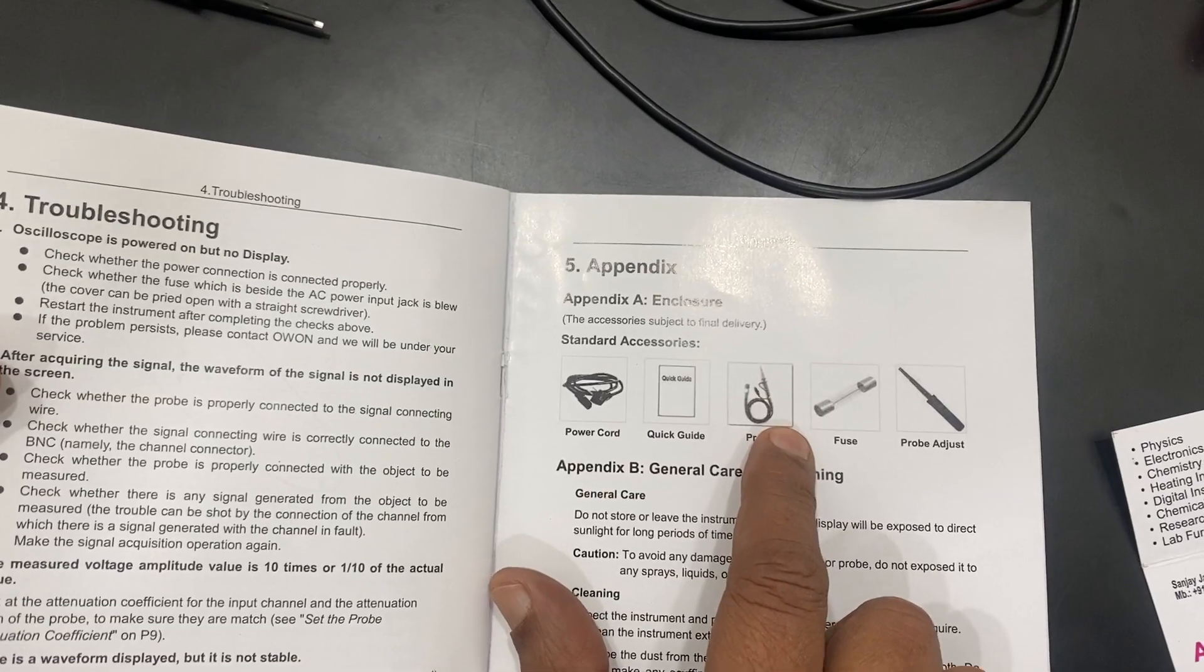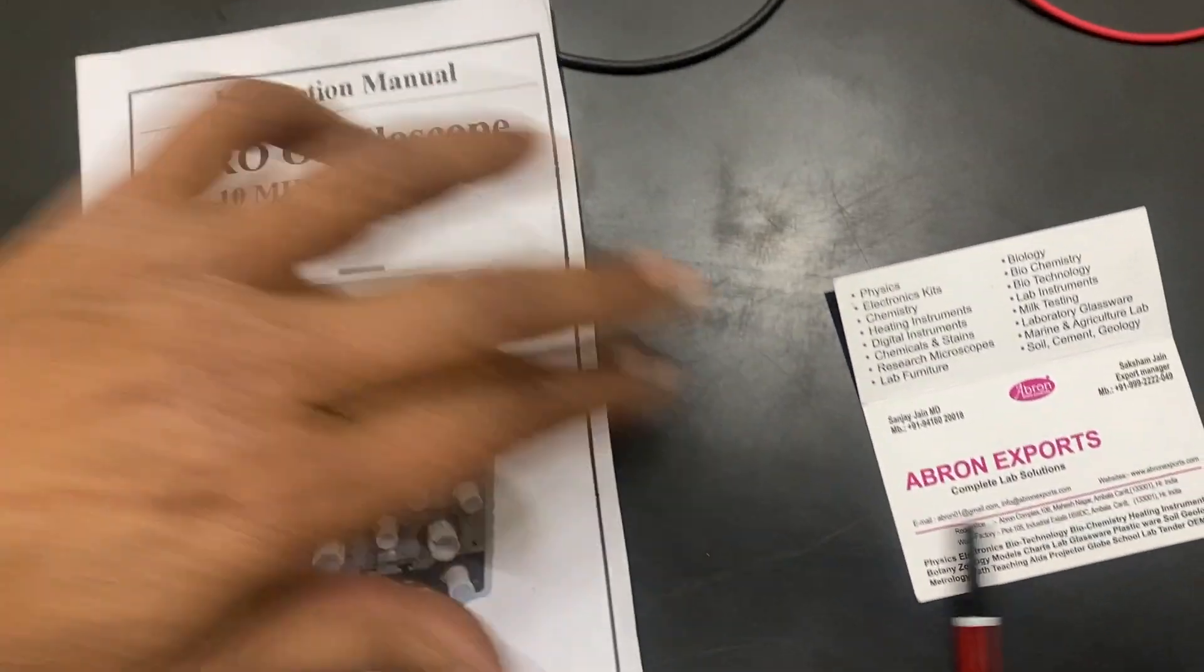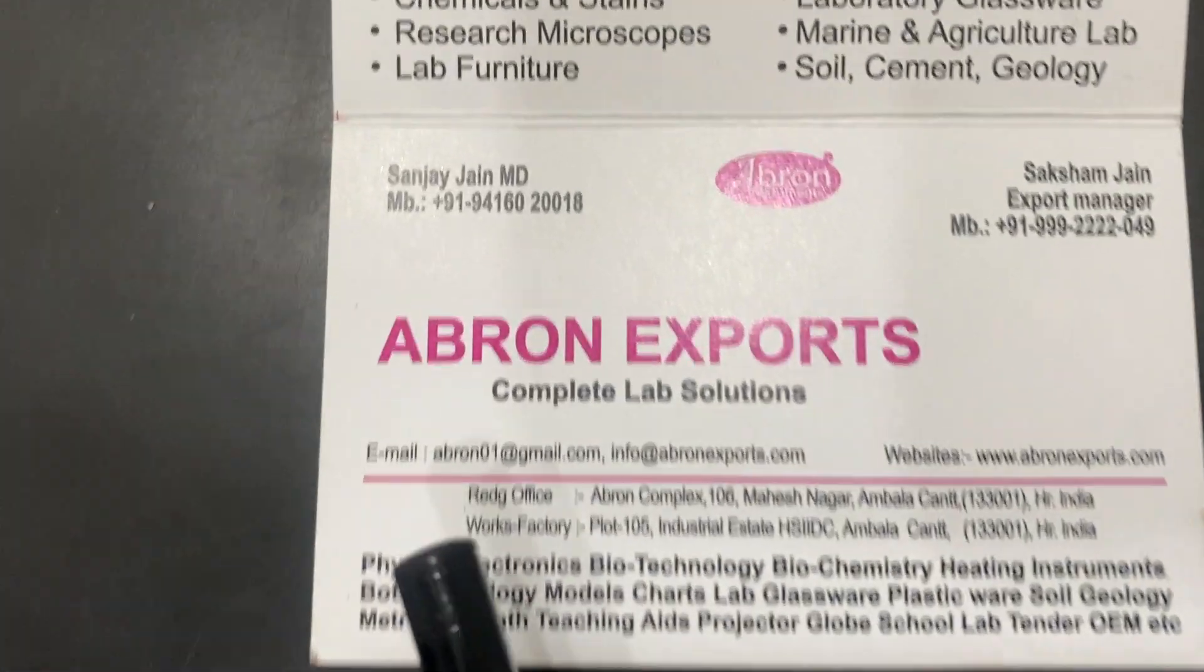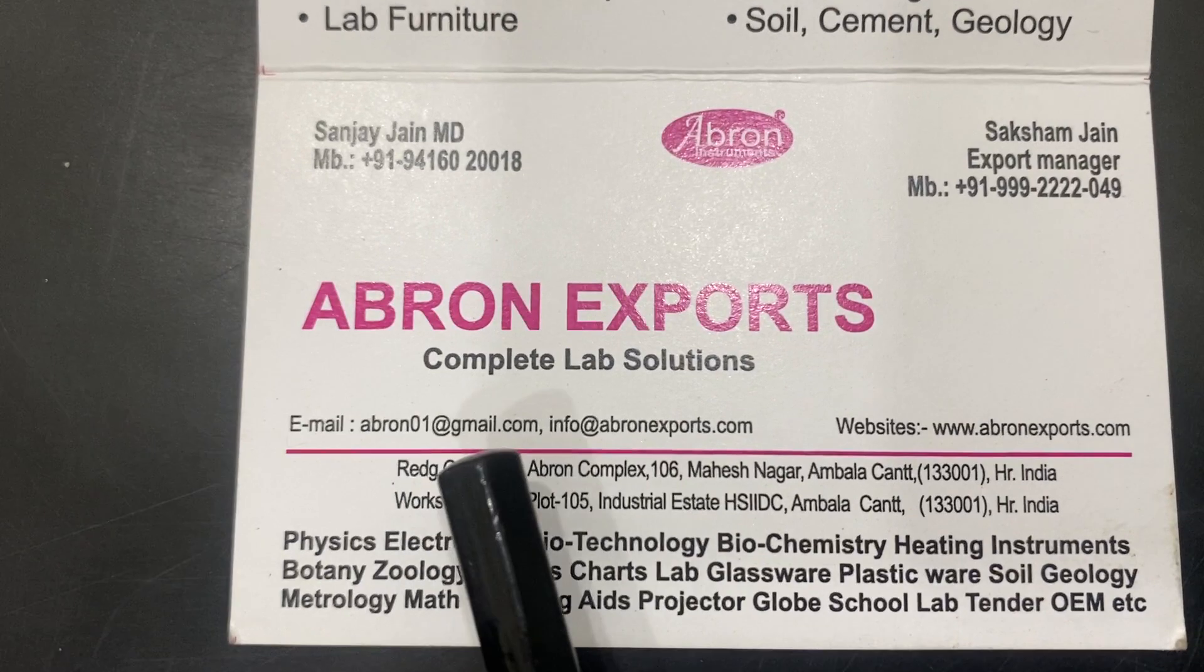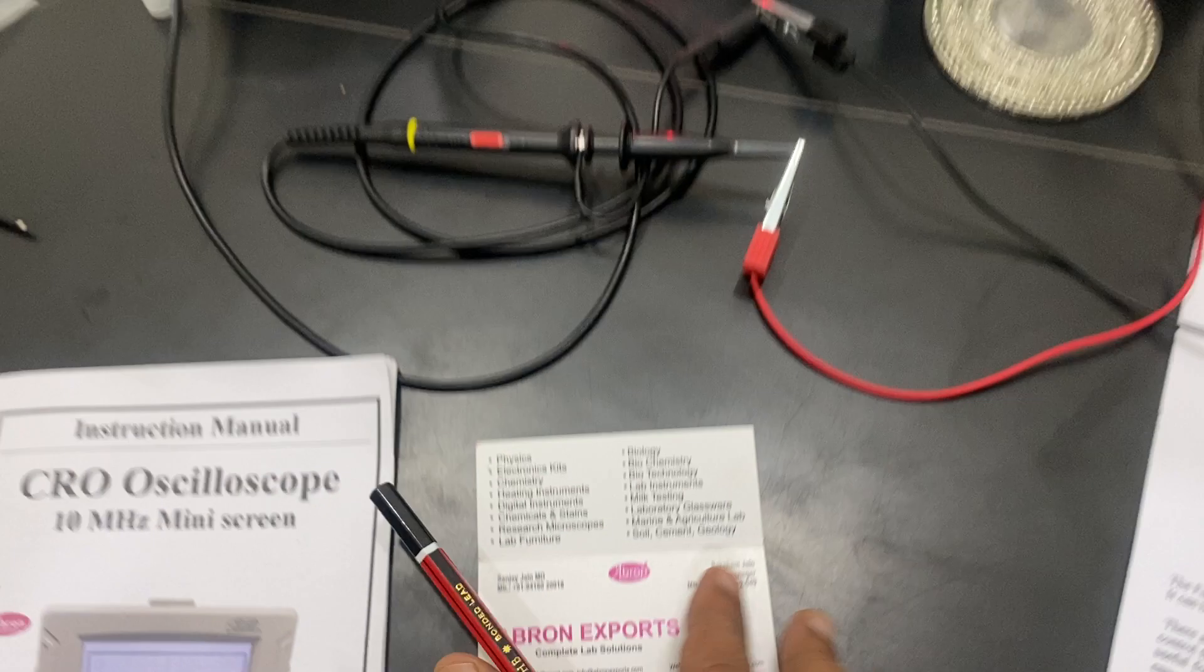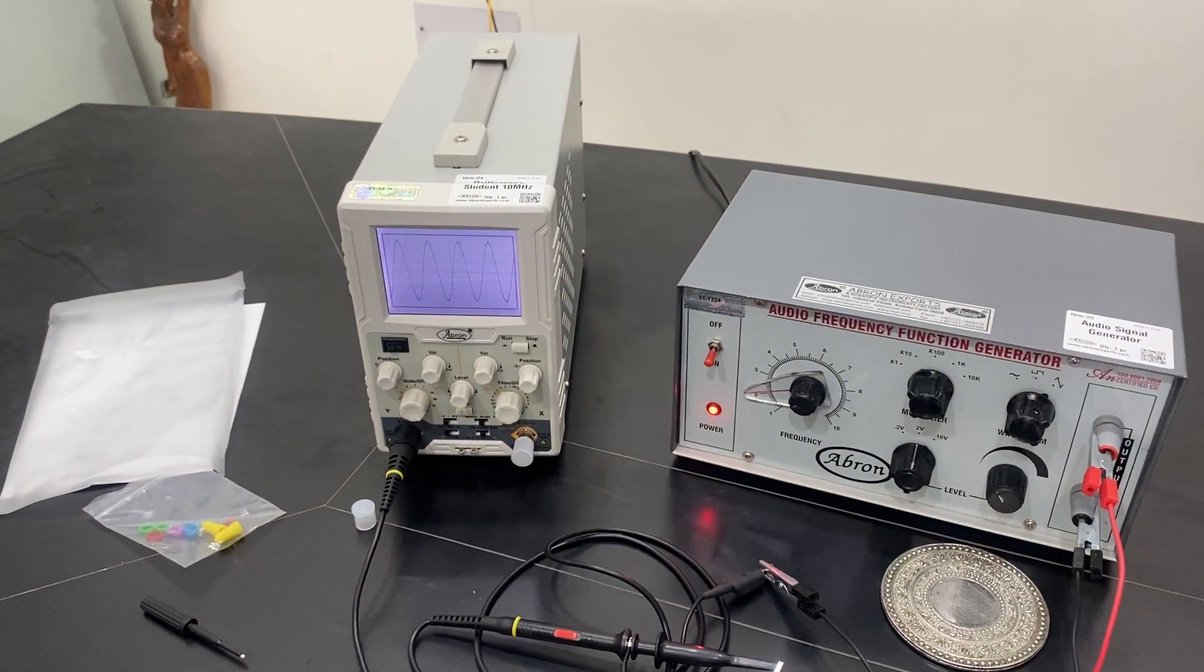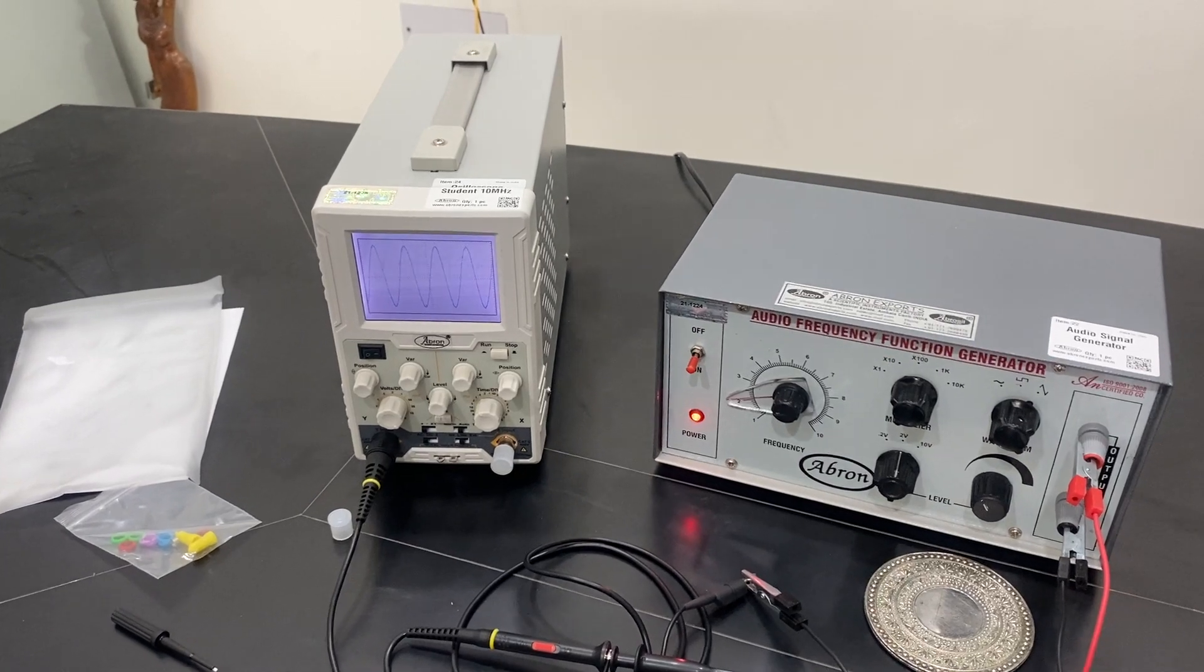It comes with the power cord, power and then adjusting the screw. Very easy to use. Please visit the website and subscribe to our channel. And write us abron01 at gmail.com and these are the WhatsApp number. You can send your order, you can send your inquiry. Please visit the website and subscribe to channel. Thank you very much.